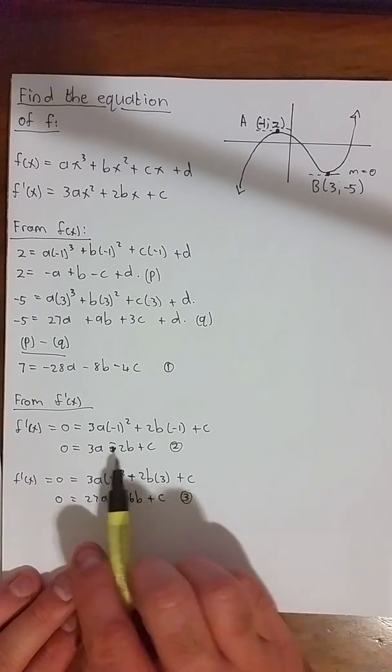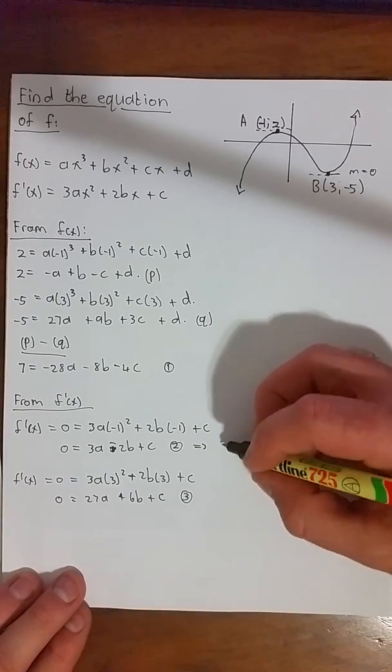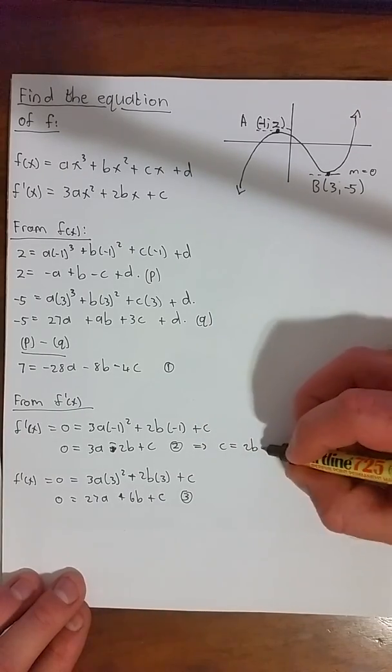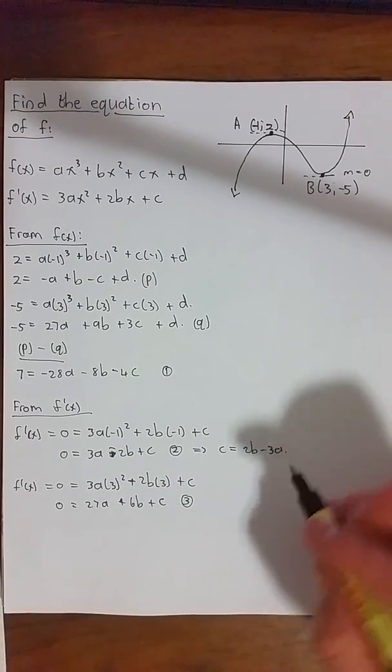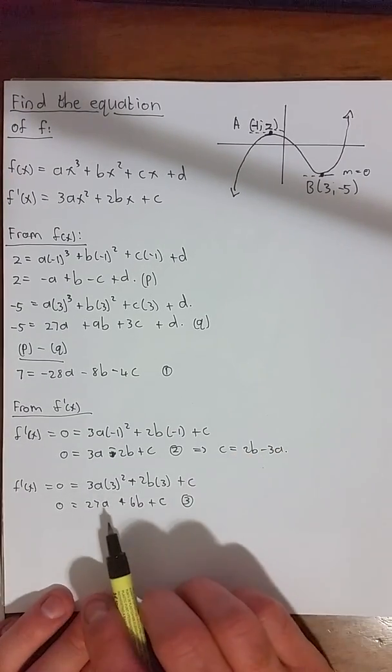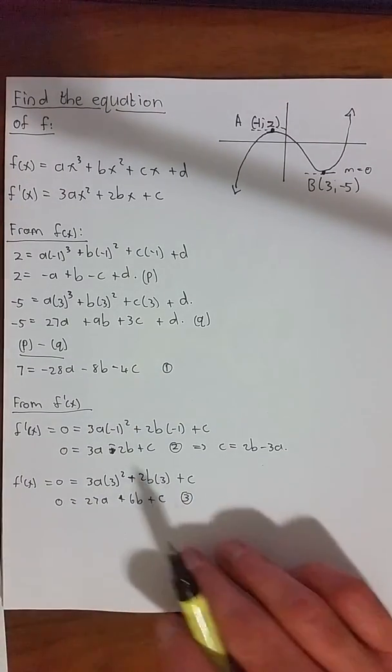So this one looks pretty easy to manipulate. We can rewrite this equation as c = 2b - 3a. And then we'll just substitute the 2b - 3a into both equation 3 and equation 1. So let me get a new piece of paper and then we can write that down.